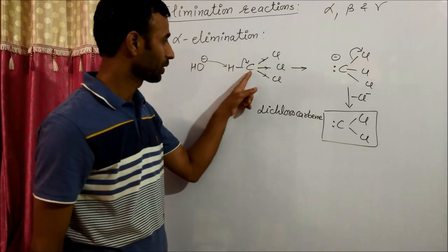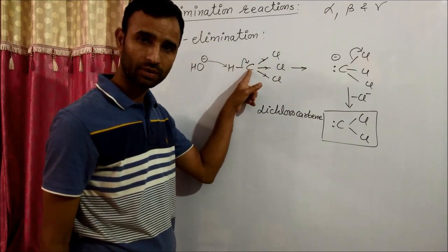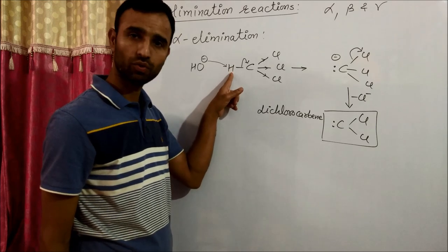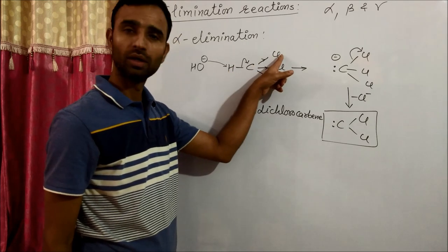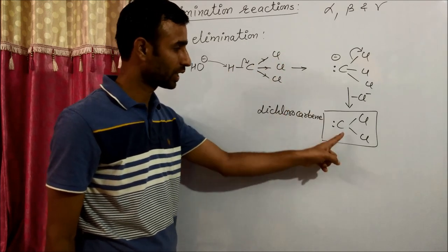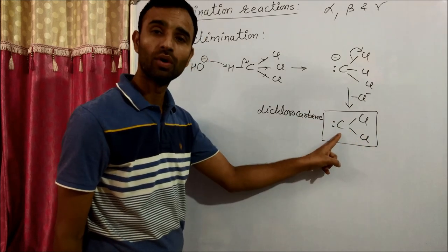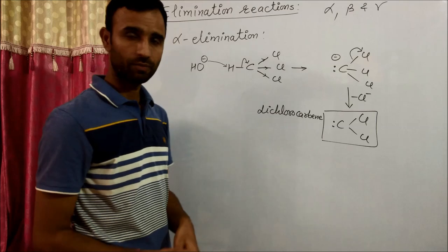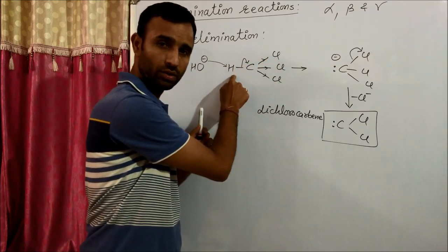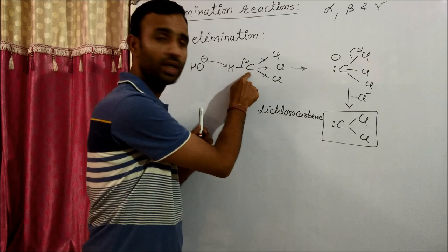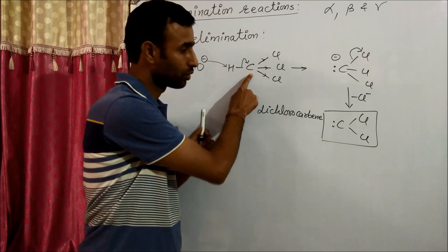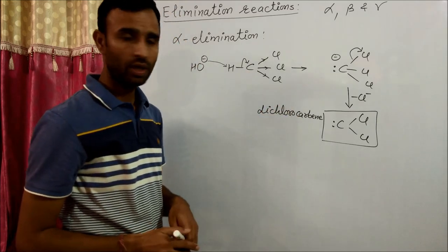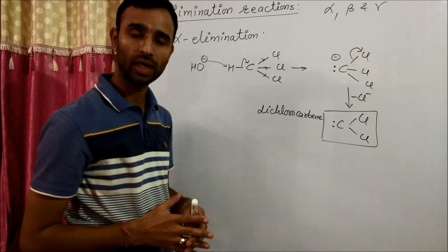In this reaction, from this carbon, one hydrogen is removed and one chlorine is removed, and we get dichlorocarbene. That means chlorine as well as hydrogen, both are removed from the same atom. This type of reaction is known as alpha elimination.